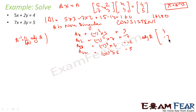If you are having difficulty understanding how I found this adjoint of A, you can see the previous examples of the same chapter where we have clearly explained how to find adjoint of A. I am assuming you have watched those videos, so I am going a little fast here.